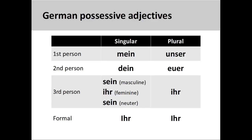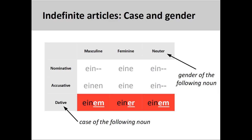The endings for possessive adjectives are the same as those found on indefinite articles. These endings indicate the case and gender of the noun that follows. For example, the dative masculine ending is 'em', the dative feminine ending is 'er', and the dative neuter ending is 'em'. Note that the dative masculine and neuter endings look the same.